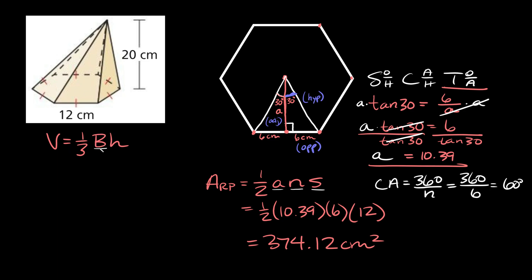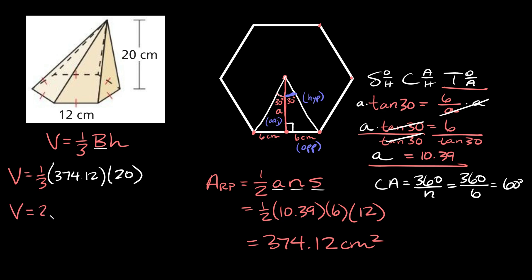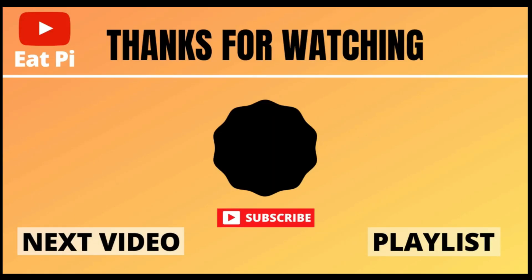We finally found the area of this hexagon — the base. Now we can plug it in for B in the volume formula, along with the height of 20 centimeters. So the volume equals one-third times 374.12 times 20, which gives us a volume of approximately 2,494.15 centimeters cubed. If you found the video helpful, make sure to leave a thumbs up below, and if you have any questions let me know in the comments section.